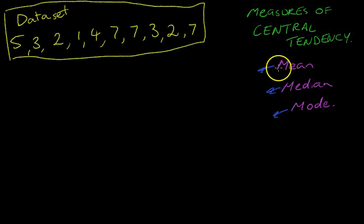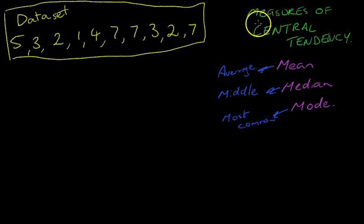So in layman's terms, the mean you may have heard this called the average before. The median, another way of thinking about the median is to think about the middle number. And the mode is the most common. Now basically, a measure of central tendency takes a data set. Here's our data set that we're going to deal with in this video. It takes a data set and it tries to turn that entire data set into one particular number, one number that sums up or represents a larger data set.